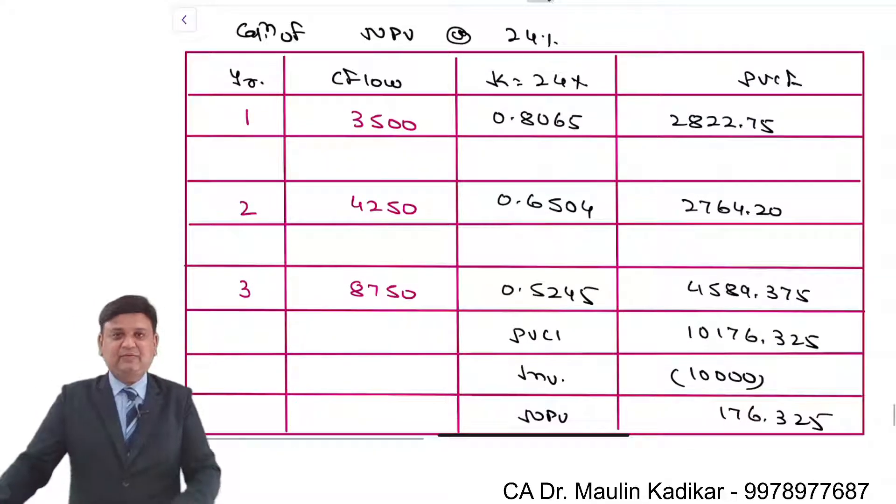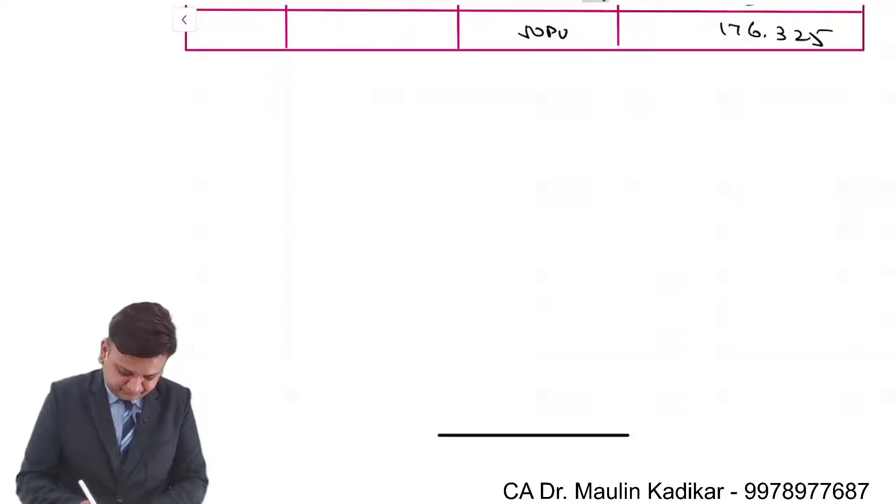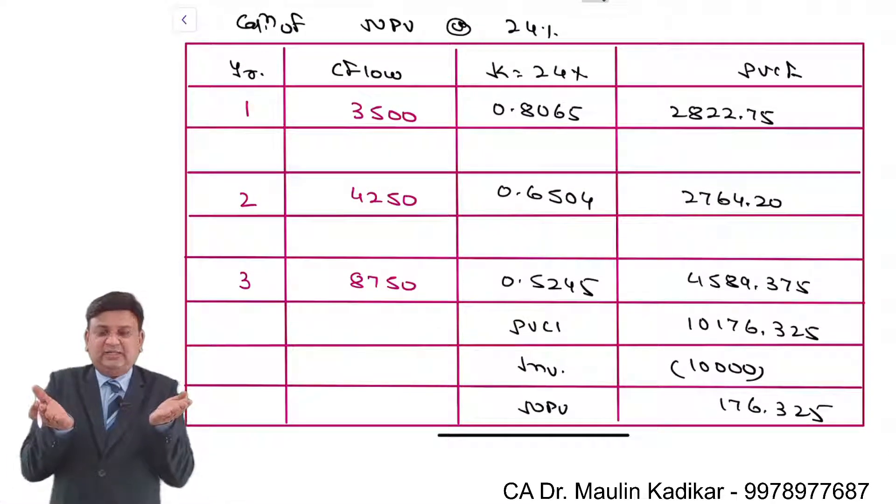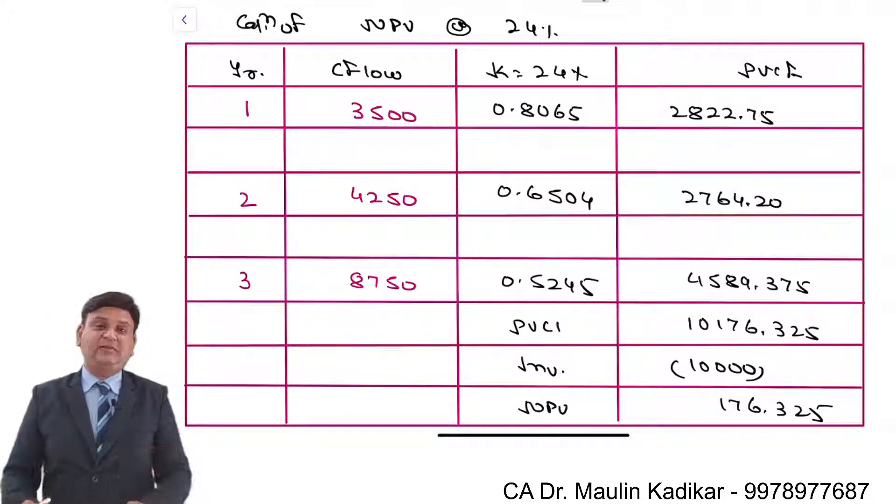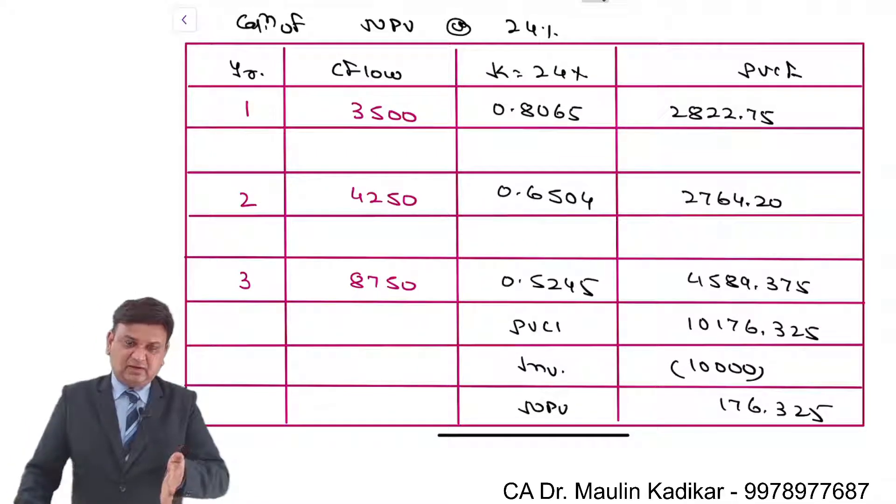This is the way NPV will be found at 24%. Now calculate at the revised cost of capital which will be more than 24%. Step number 2. Now friends we understand that we increase the cost of capital from 10% to 24% with the hope to get negative NPV. We have not been able to get negative NPV, however we have been able to get less positive NPV.